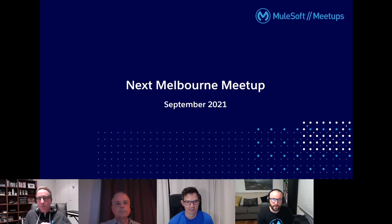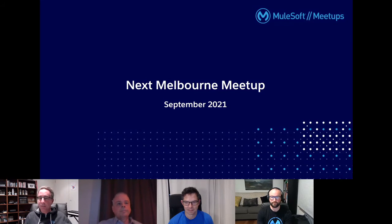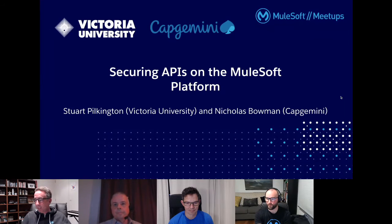Without further ado, I'll hand over to Nicholas Bowman from Capgemini, one of our premier partners, and Stuart Pilkington from Victoria University, one of our clients. They'll be talking about how to secure APIs on the MuleSoft platform and provide some real examples of how clients are using the platform.